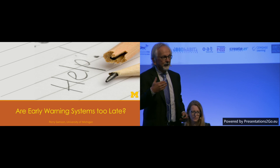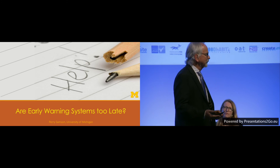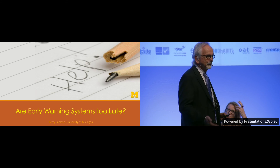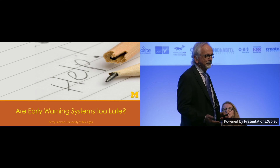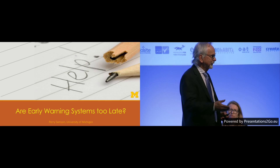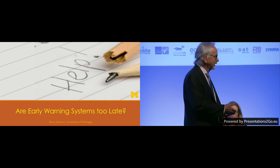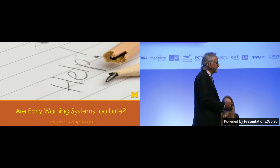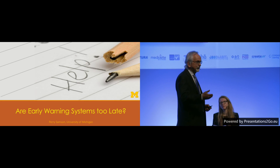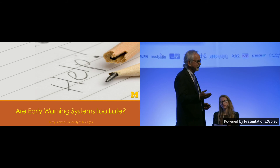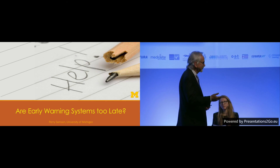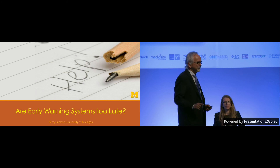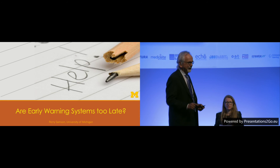So is an early warning system too late? Many of the early warning systems we have now are based on what grades the students are getting as this term goes on. My interest is: can I predict the student's potential for success or failure based on how they behave in class?